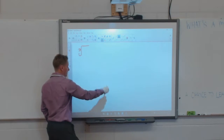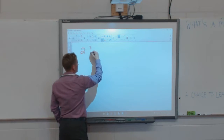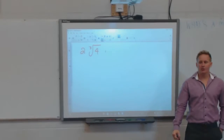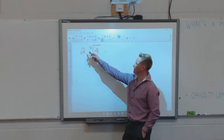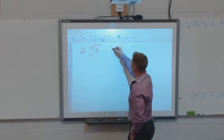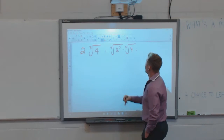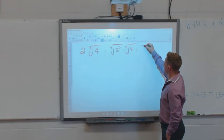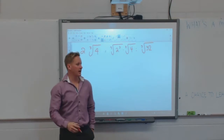Let's make it simple. Take 2 cube root 4. If I wanted to change that into an entire radical, what am I going to do with the 2 to get it underneath the cube root? I'm going to cube it. So: cube root of 2 cubed times the cube root of 4. 2 cubed is 8. 8 times 4 is 32. So the cube root of 32. The same process applies.